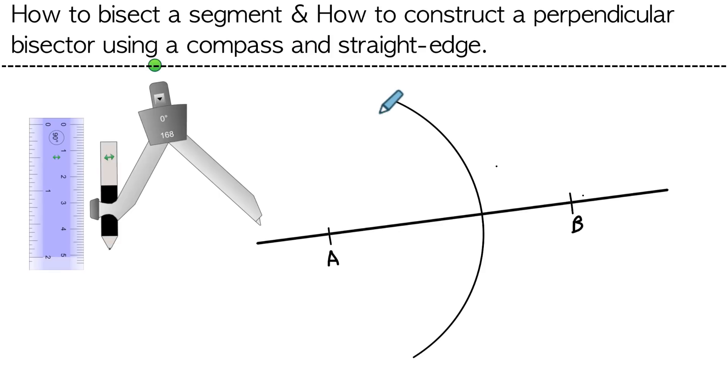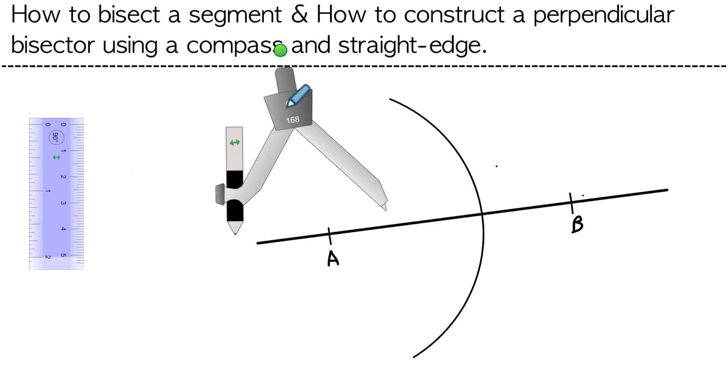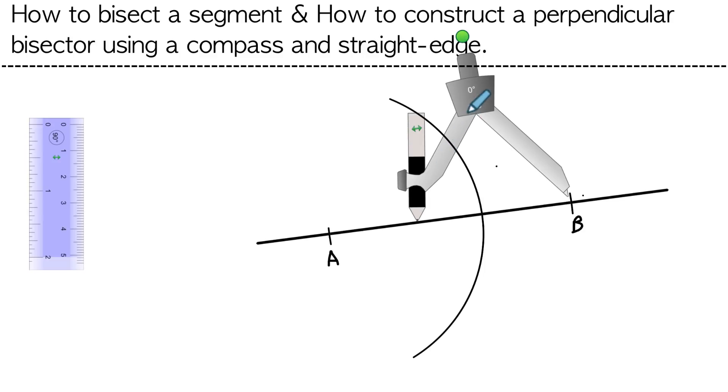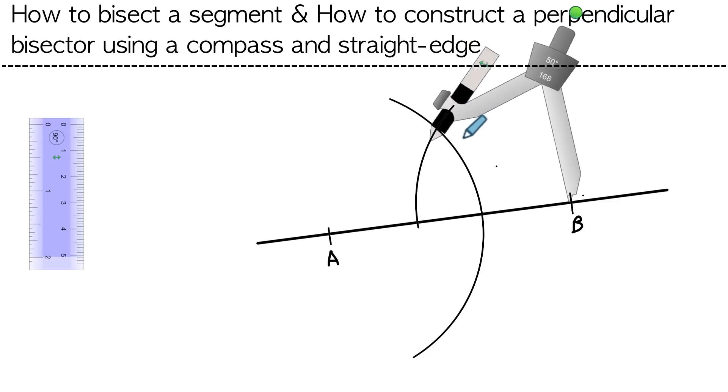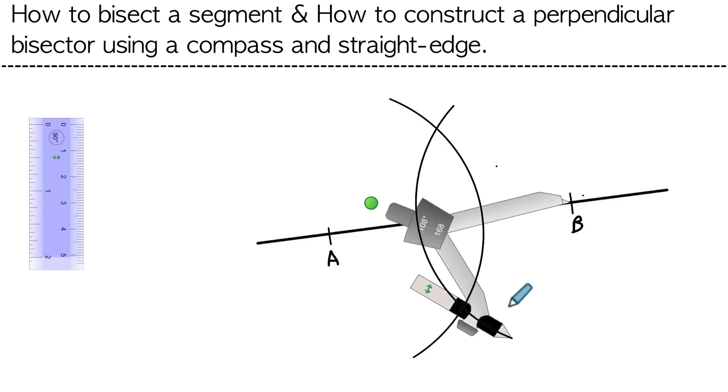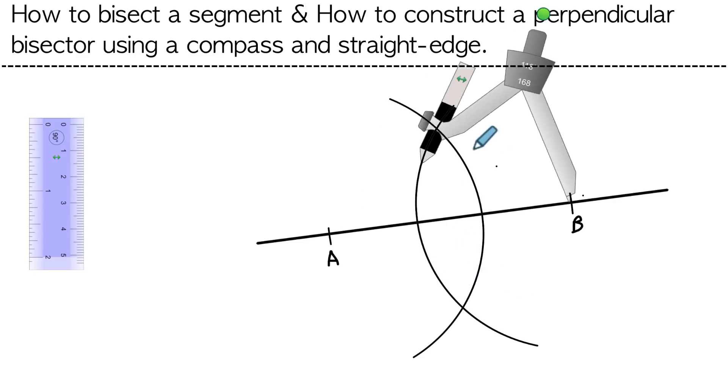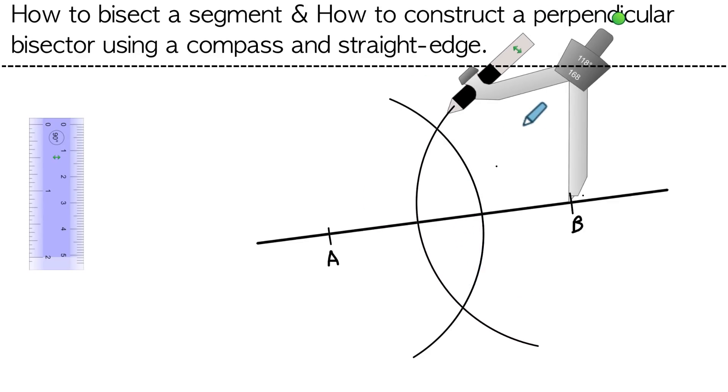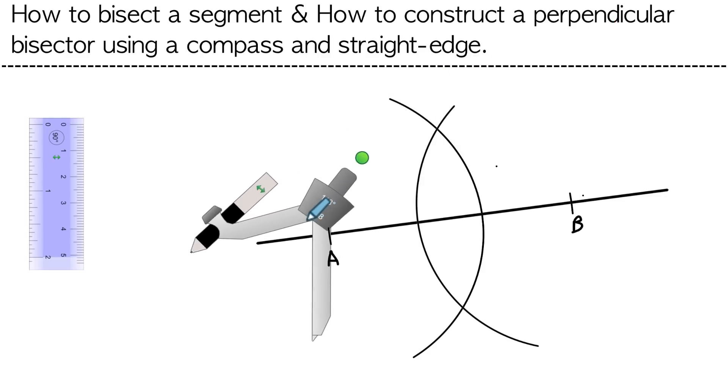Now we flip it around, careful not to change the arm here. We have not changed this distance, we have only flipped it around. And we're going to put the metal part here down on B. And as you can see it's a little bit more than halfway and we're going to make another arc. And it's important that you intersect the first arc at two points in the top and the bottom. And like so.